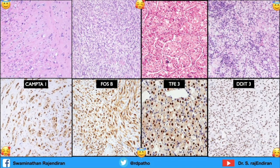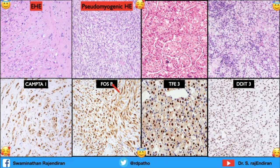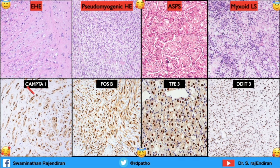In this composite picture, vacuolated cells are CAMTA1-positive — very specific for epithelioid hemangioendothelioma. FOSB is positive in pseudomyogenic hemangioendothelioma. TFE3 shows nice positivity in an alveolar-pattern tumor — alveolar soft part sarcoma. DDIT3 is nicely positive here — myxoid liposarcoma. Diagnoses are primarily made with IHC: take the H&E to the markers and confirm.